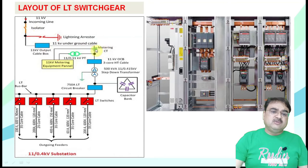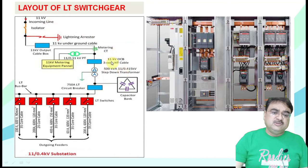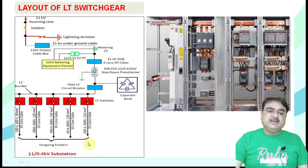Along with the metering unit — which includes CT (current transformer) to measure current and PT (potential transformer) to measure voltage — we can switch the supply on and off. This supply is then given to a step-down transformer. The step-down transformer takes the 11 KV supply and steps it down to 415 V.